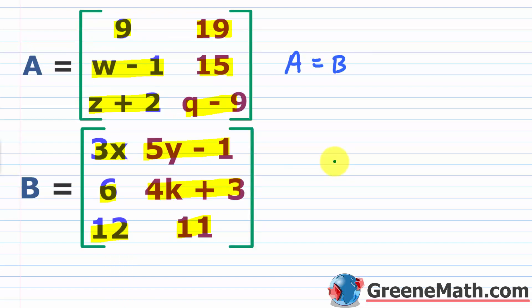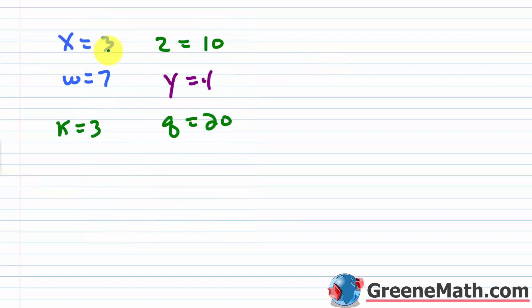So these are the values for the variables that make the equation A equals B true — you just look at the corresponding entries. Both matrices are 3 by 2, which satisfies the first condition that they must be the same order. Then corresponding elements must be equal: X = 3, Z = 10, W = 7, Y = 4, K = 3, and Q = 20. That's what you do if you get this as a question on your homework or on a test.